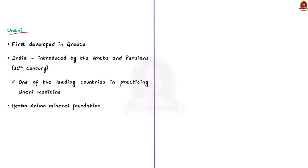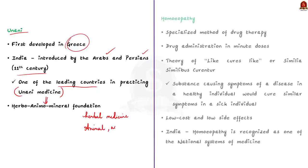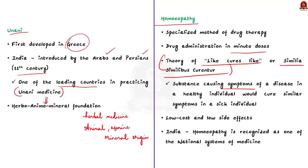Unani was first developed in Greece and introduced in India around the 11th century by Arabs and Persians. India today is one of the leading countries practicing Unani medicine. Unani has a herbo-animo-mineral foundation, generally using naturally occurring herbal medicine but also medicines of animal, marine, and mineral origin. Homeopathy is a specialized method of drug therapy that cures natural diseases by administering drugs in minute doses. It is based on the theory that 'like cures like' — similia similibus curentur — meaning a substance causing symptoms of a disease in a healthy person would cure similar symptoms in a sick person. Homeopathy drugs are generally low-cost with low side effects and are recognized as one of India's national systems of medicine.